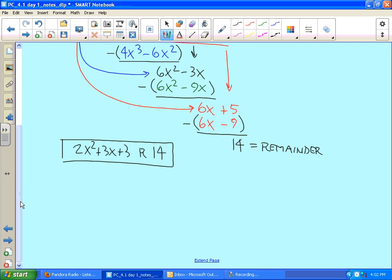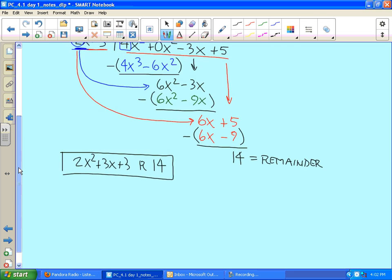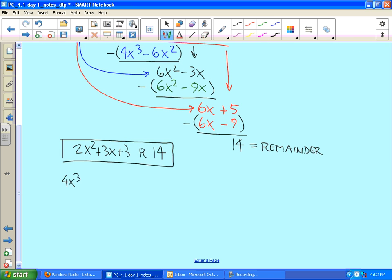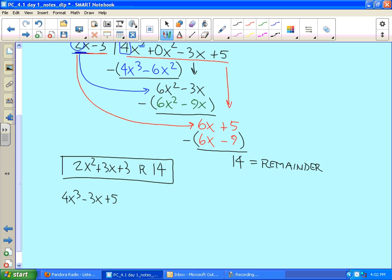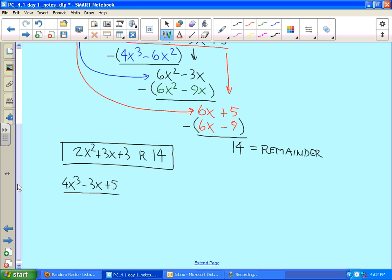We can also show the answer like this to get our original dividend. 4x³ - 3x + 5 was being divided by 2x - 3, and what resulted was 2x² + 3x + 3 plus a remainder of 14 over 2x - 3. There's a way of expressing the remainder as a quotient of the divisor. So that's another way of writing this.